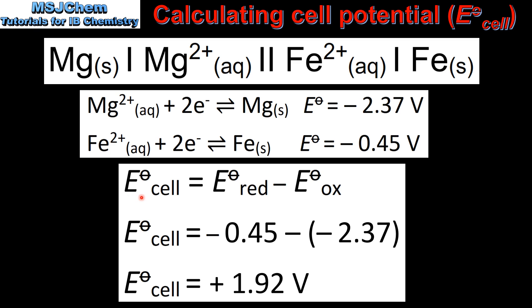Once again we will use this equation to calculate the cell potential. The Iron half cell will undergo reduction and the Magnesium half cell will undergo oxidation. So when we input the values we get negative 0.45 minus negative 2.37. This gives us a cell potential of positive 1.92 volts.